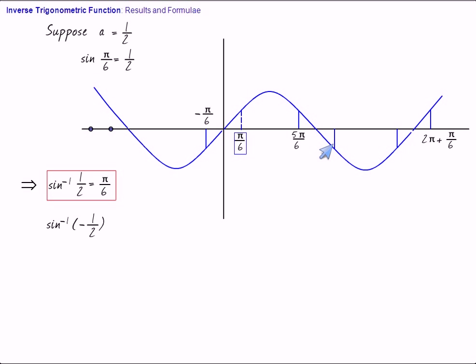This is the value. Then this is the value. This value is 7 pi by 6, and this value is 11 pi by 6. And then this value is again minus pi plus pi by 6, that is minus 5 pi by 6. And so on.